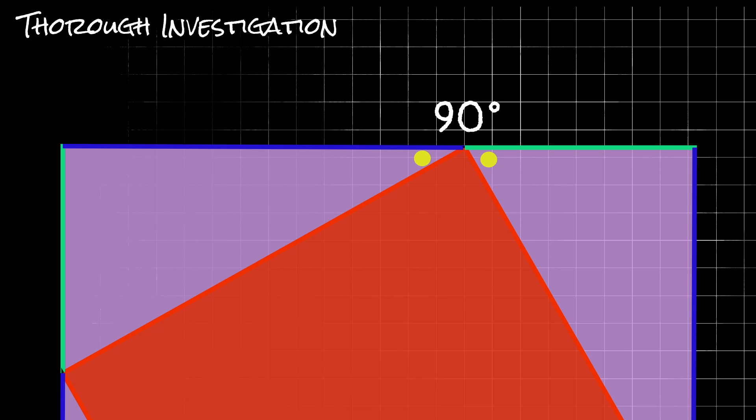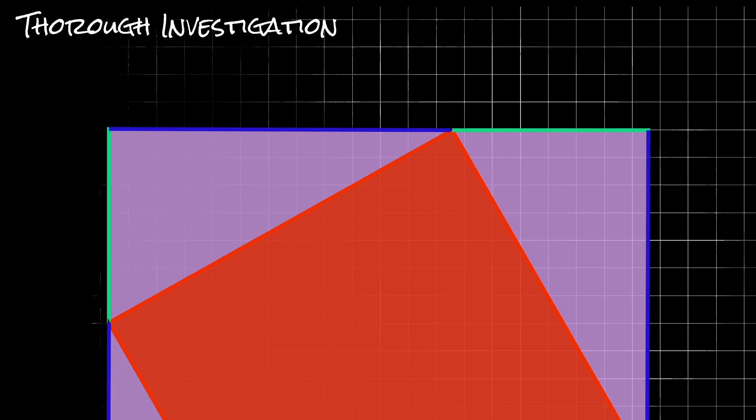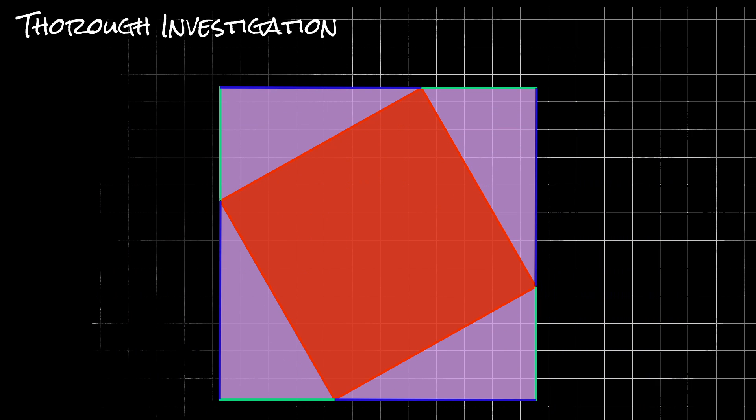then we know that 180 minus these two angles gives us this angle of our assumed square. So, 180 minus 90 does in fact equal 90, and that proves that this center square really is in fact a square.